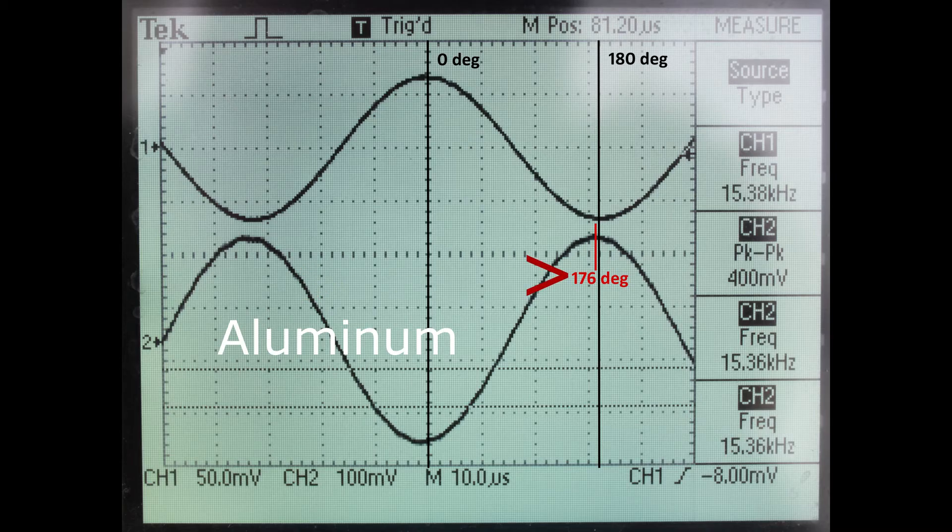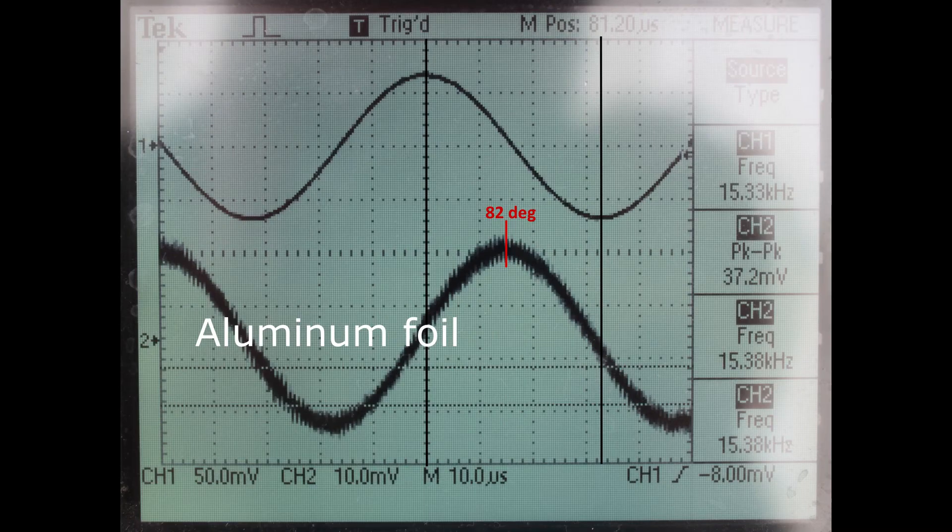Now as I mentioned earlier, there is a big difference between aluminum foil and an aluminum block in the ID value. So if I use a piece of aluminum foil, the phase shift drops down to 82 degrees.